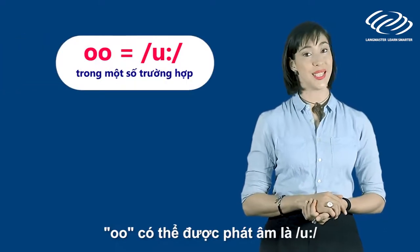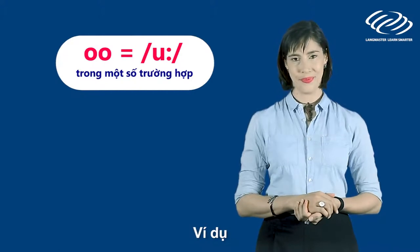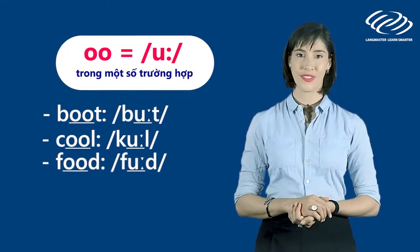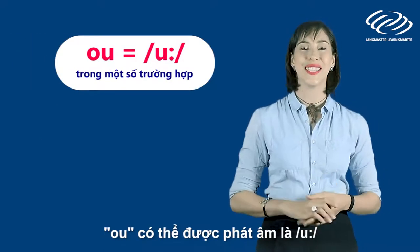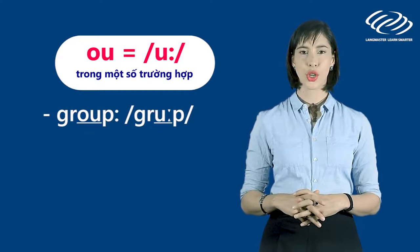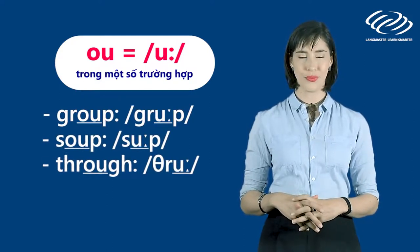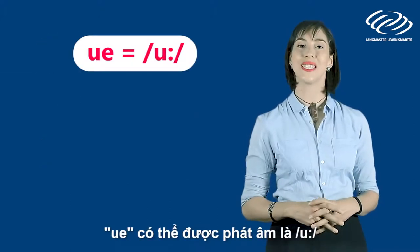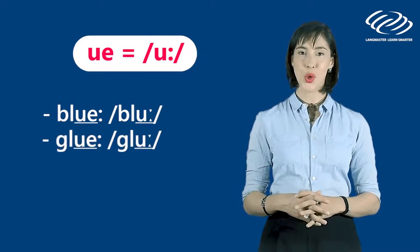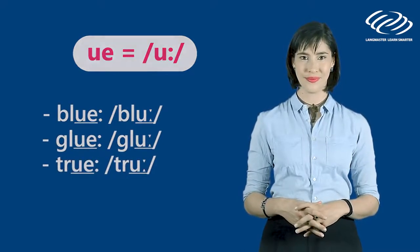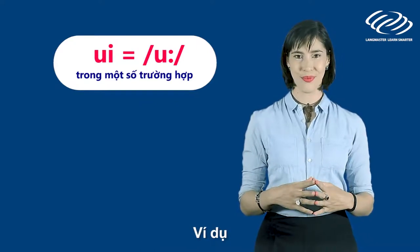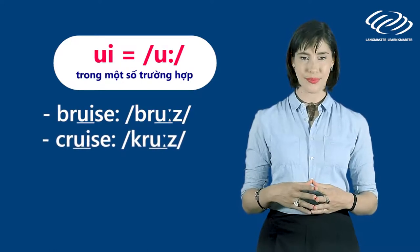O-O can be pronounced as long 'oo' in some cases — for example: boot, cool, food. And O-U can be pronounced as long 'oo' in some cases — for example: soup, through. And U-E is pronounced as long 'oo' in the following: blue, glue, true. And U-I is pronounced as long 'oo' in some cases, such as: cruise, juice.